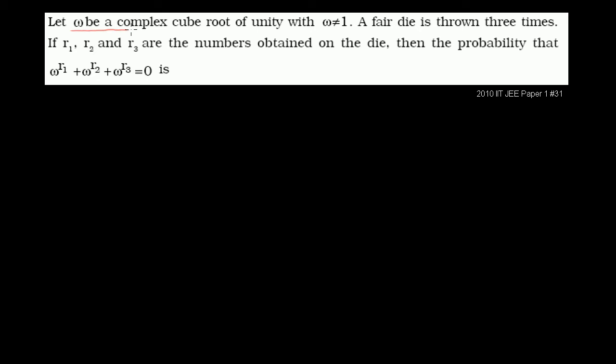Let's start with the first part and see if some patterns fall into place. Omega is a complex cube root of unity, which is a fancy way of saying it's a complex cube root of 1, with omega not equal to 1. Let's think about all of the cube roots of 1. That's analogous to figuring out all x's that satisfy x to the third equals 1. We can subtract 1 from both sides and write this as x cubed minus 1 equals 0. All roots of this equation will be cube roots of 1.